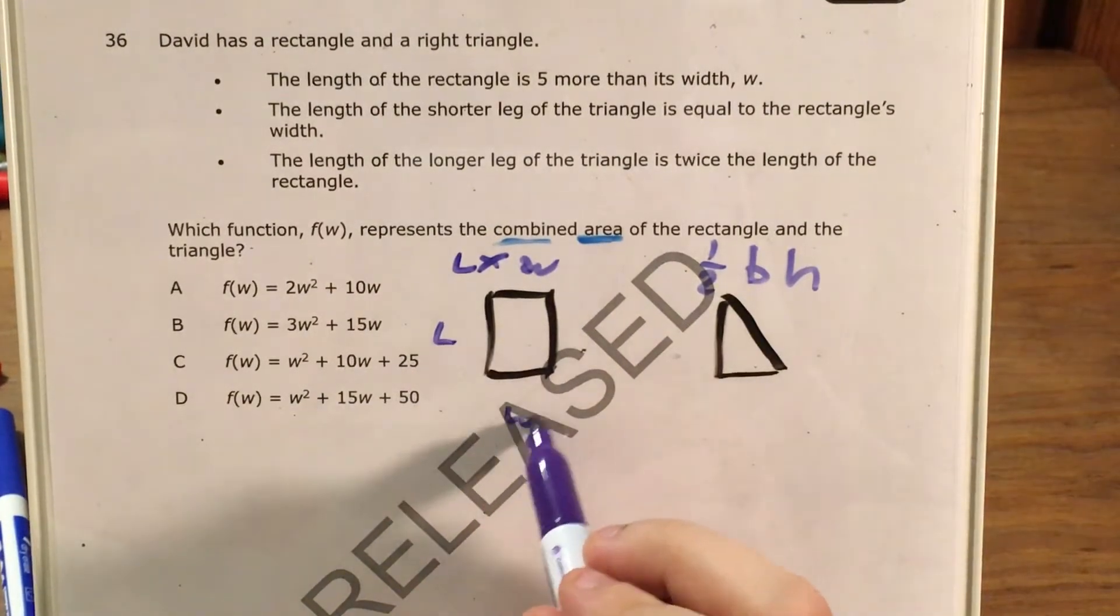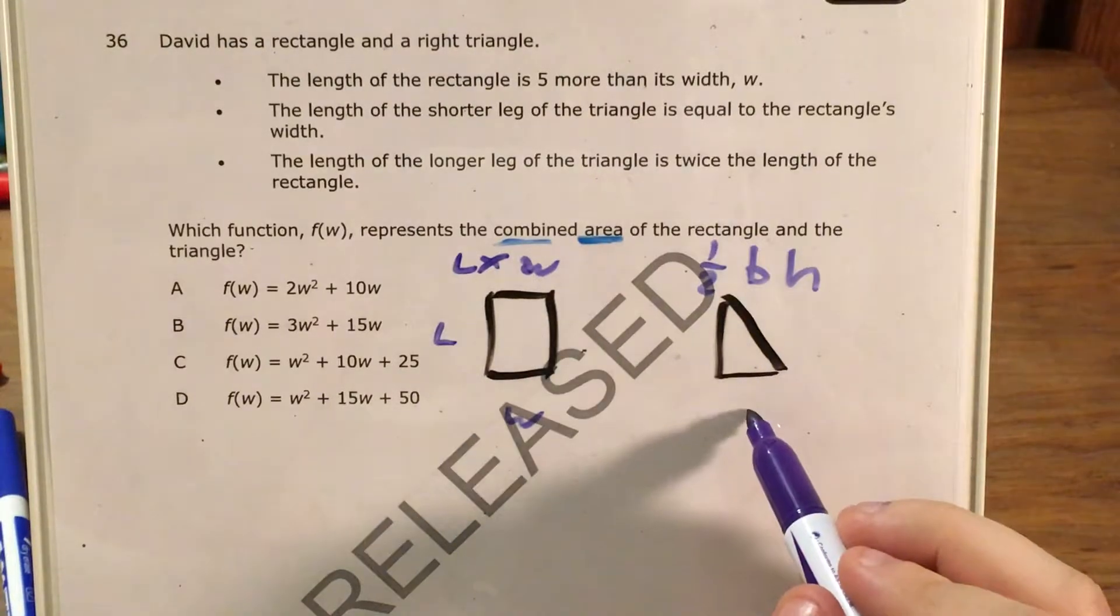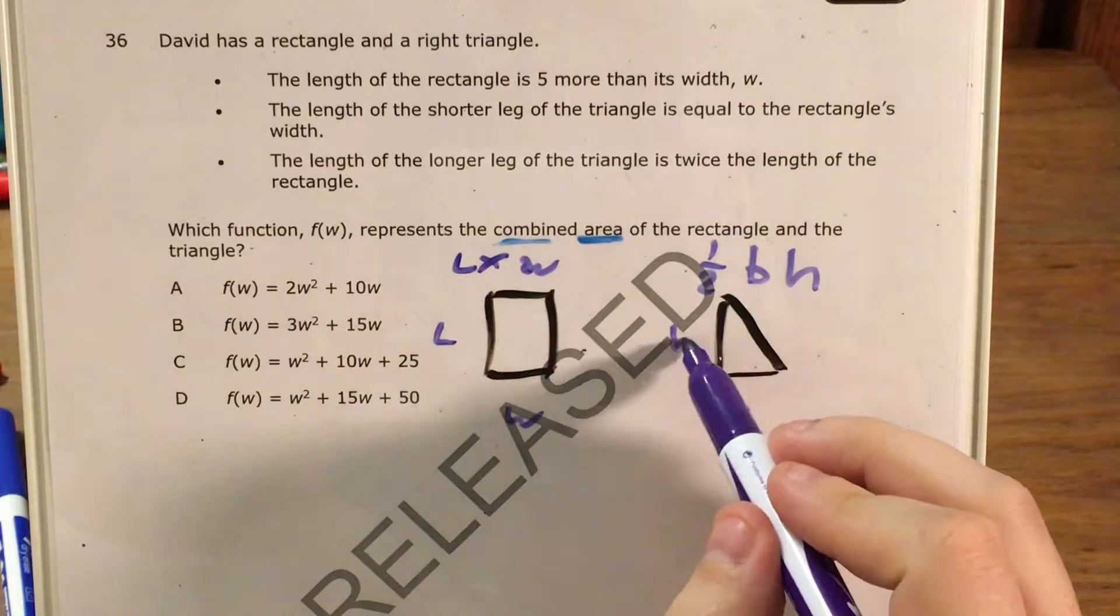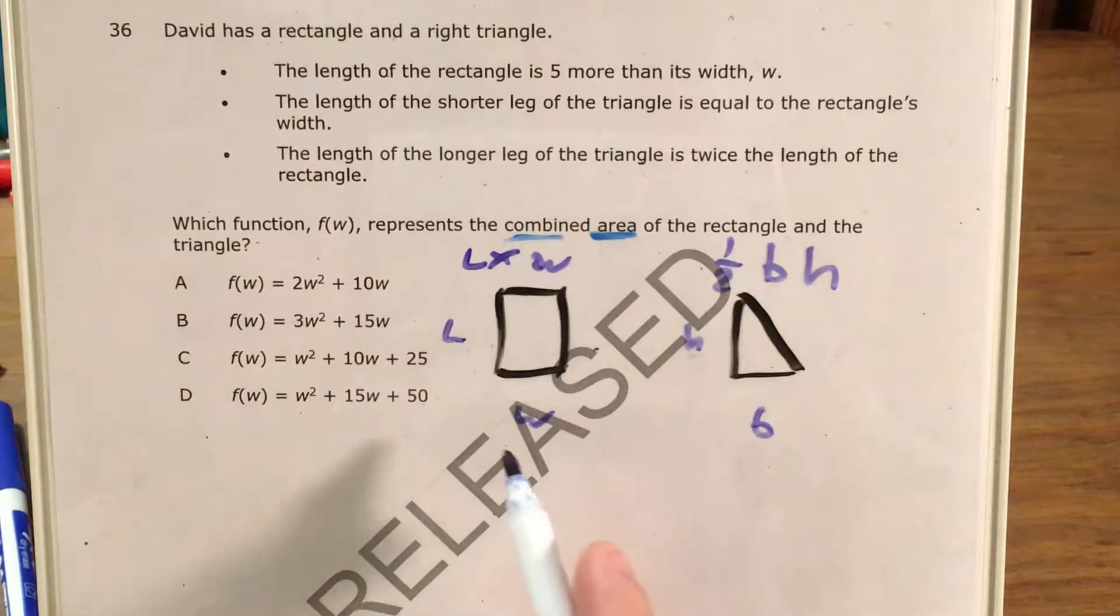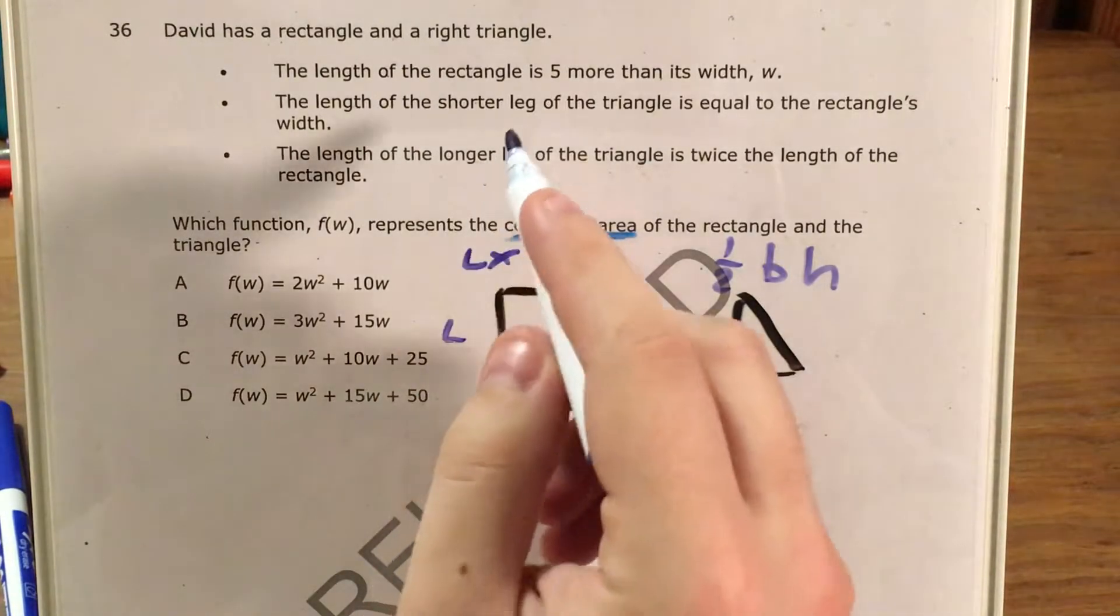Let's see, that's my length, that's my width. I'll leave some room to write here. Base and height. Cool. So now that we have a picture that we can fill in some information from, I'm going to go ahead and start to do that.